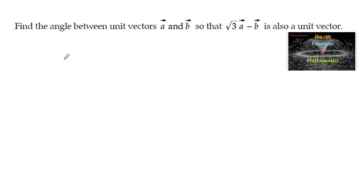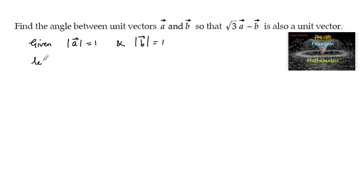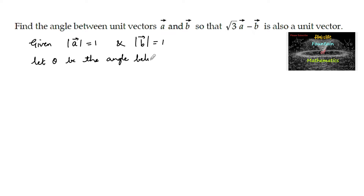Find the angle between unit vectors a and b so that √3a - b is also a unit vector. Given: a is a unit vector, so |a| = 1, and b is also a unit vector, so |b| = 1. Let θ be the angle between the two vectors a and b.